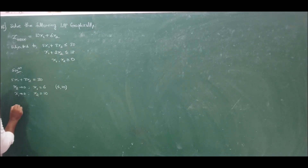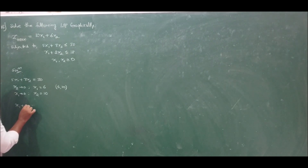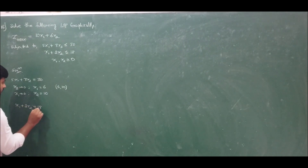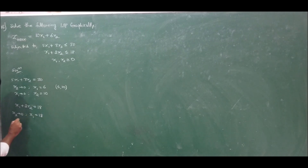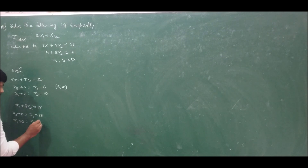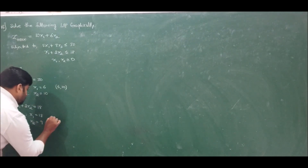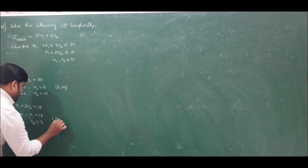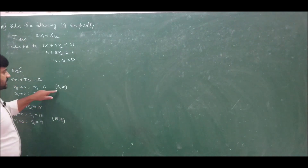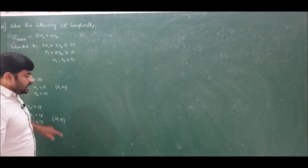Similarly, moving to the second constraint: x1 plus 2x2 equals 18. Setting x2 to 0 gives x1 equals 18. Setting x1 to 0 gives x2 equals 9. Therefore, the coordinates for the second constraint are (18, 9). So we have one line through (6, 10) and another through (18, 9).